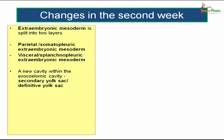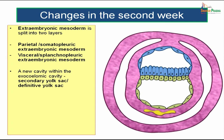As the mesoderm forms, a part of the primitive yolk sac is pulled off, resulting in shrinkage of the primitive yolk sac. This newly formed yolk sac — smaller, with a bigger portion pinched off by the mesoderm — is known as the secondary yolk sac or definitive yolk sac. The primitive yolk sac is converted into the secondary yolk sac by pinching off a larger portion. Yolk sac also follows the rule of two: primitive yolk sac and secondary yolk sac.